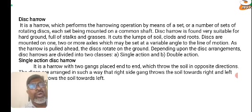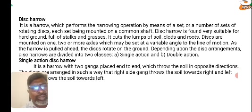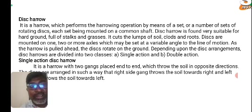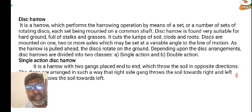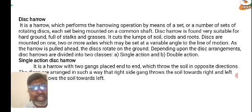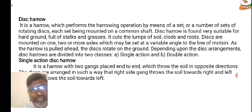The disc harrow performs the harrowing operation by means of a set or number of sets of rotating discs, each set being mounted on a common shaft. It may have 6, 8, or 12 discs — all connected to a common shaft. The disc harrow is found very suitable for hard grounds full of stalks and grasses. It cuts lumps of soil, clods, and roots. Discs are mounted on one, two, or more axles set at a variable angle to the line of motion. As the harrow is pulled ahead, the discs rotate on the ground. Depending upon the disc arrangement, disc harrows are divided into two classes: single action and double action.